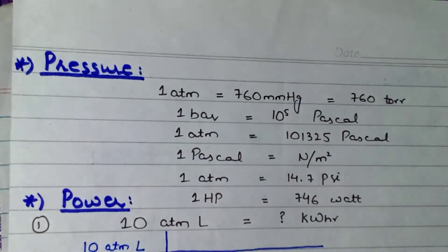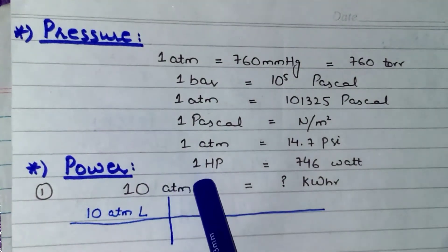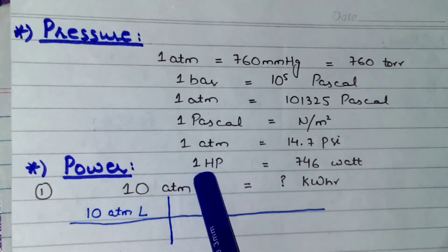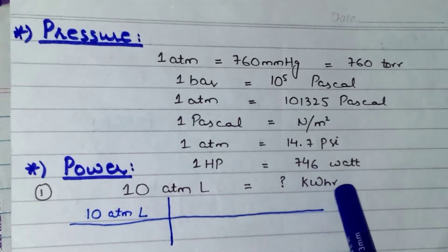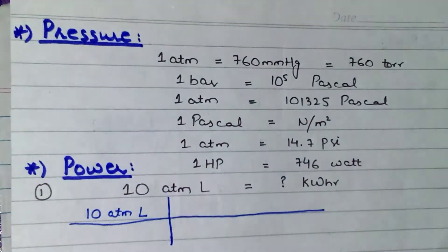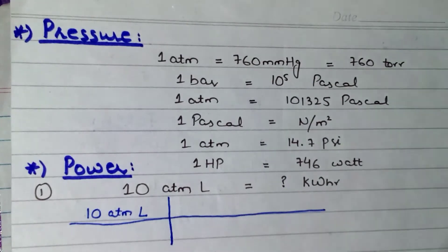So our first question is: how many kWh are there in 10 atm·L? If we see the question clearly, this atm is the unit of pressure, whereas L is the unit of volume, and kWh is the unit of energy. So we have discussed all these units in the previous videos. If you haven't watched the previous videos, please go and watch them so that you can understand these questions easily.